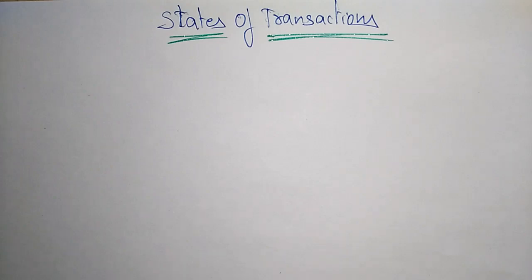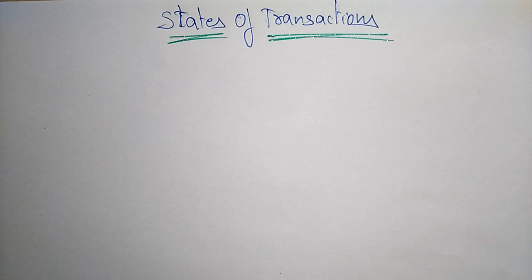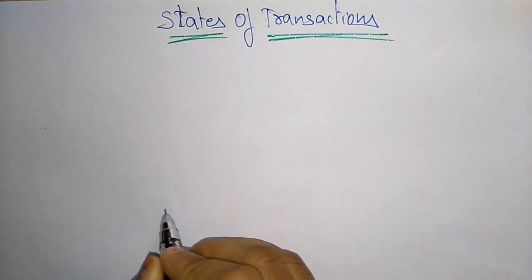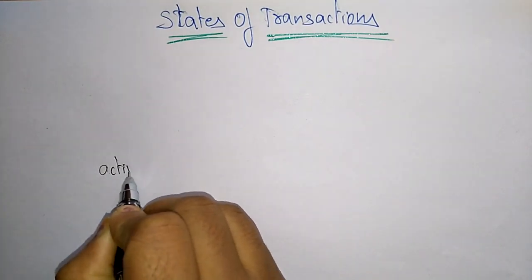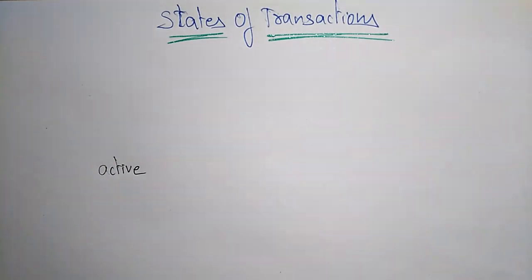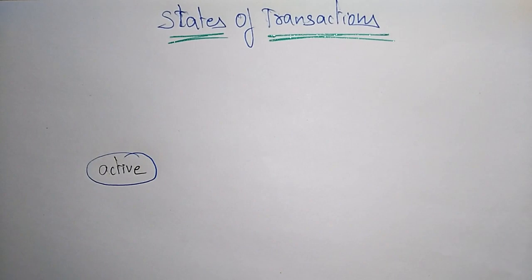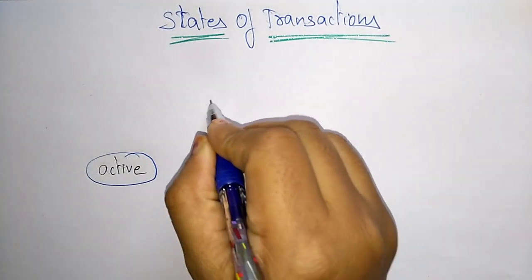Hi students, welcome back. Coming to the next topic, that is the states of transactions. For each transaction there are different states, and based on the state we can say whether a transaction is successful or not. The different transaction states are: active state, and partially committed state.